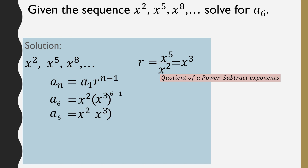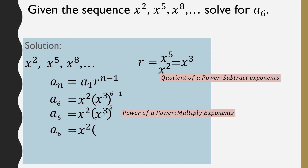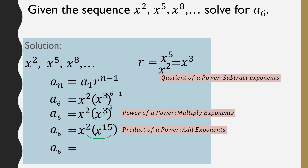Next, simplify x cubed to the power of 5. This uses the law of exponents for power of a power, where you multiply the exponents: 3 times 5 is 15. So x cubed to the power of 5 is x to the power of 15. Finally, get the product of x squared and x to the power of 15. Using the product of powers rule, add the exponents: 2 plus 15 is 17. So a sub 6 equals x raised to the power of 17.